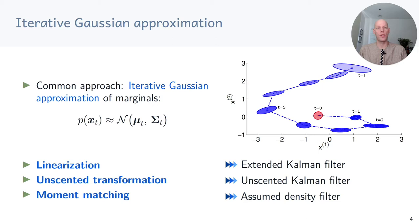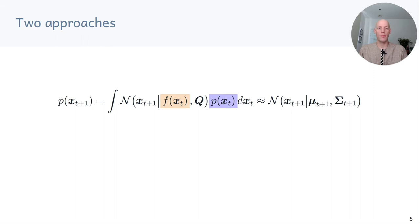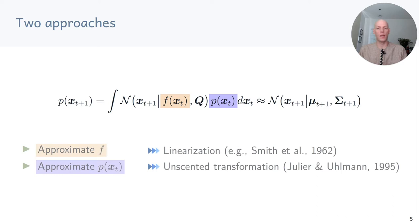To recap: we want to compute the predictive distribution of the state at time t plus one by solving this integral, assuming the state at time t is Gaussian distributed. We'll discuss two approaches. First, we approximate the function inside the integral by linearizing it, which allows us to compute the mean and covariance of x_{t+1} for the linearized function. As an alternative, we approximate the state distribution p of x_t and use the unscented transformation to compute an approximation to the mean and covariance of the distribution of the state at time t plus one.